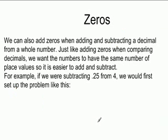Now, you can also add zeros when adding and subtracting decimals from whole numbers. Like adding zeros when comparing decimals, we want the numbers to have the same number of place values so it's easier to add and subtract. For example, if we were subtracting .25 from 4, we would first set up the problem like this. So we have 4.